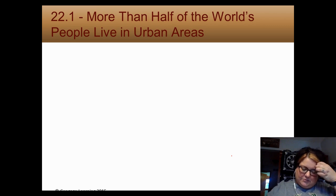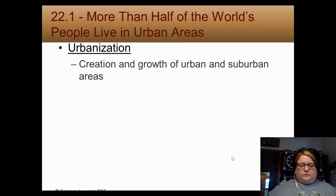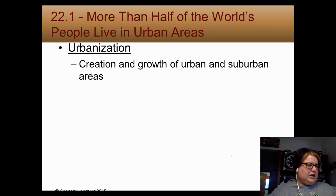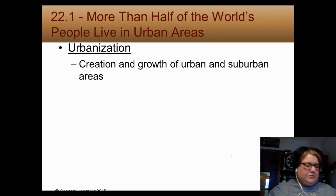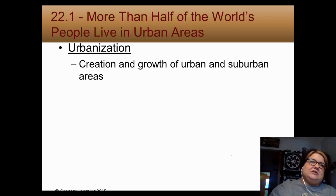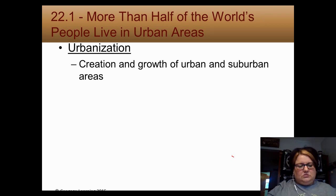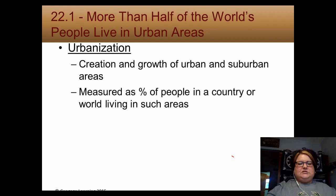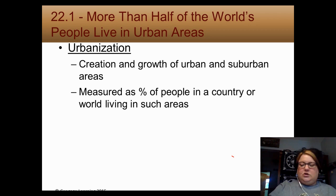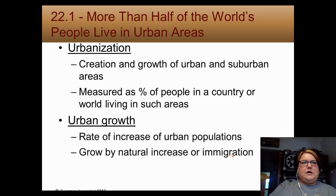Now we're moving into Chapter 23, which is urbanization — number seven on your guide. Urbanization is the growth and creation of urban and suburban areas. We live in a suburb. 52% of the world lives in urban areas. Urbanization is measured by the percent of people in a country or world living in such areas. Urban growth is the rate of increase of urban population, either by births or by immigration.